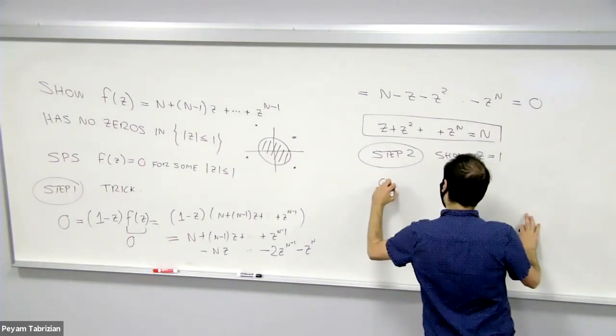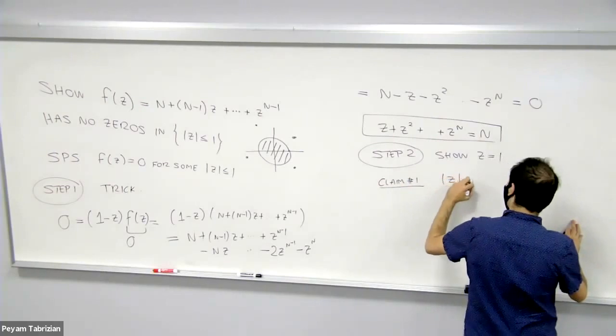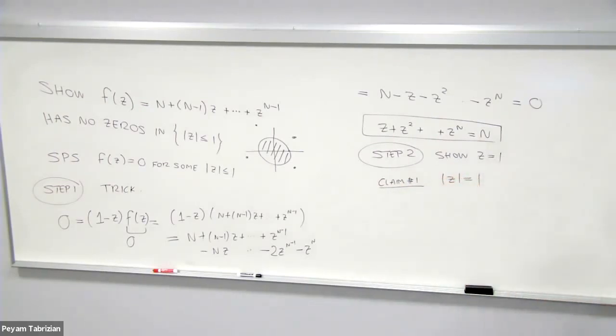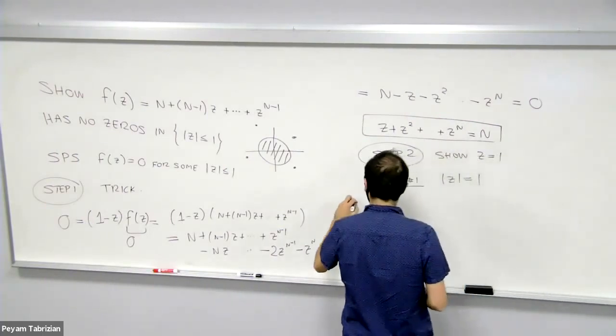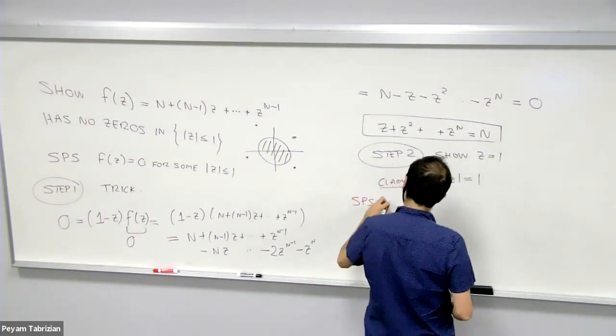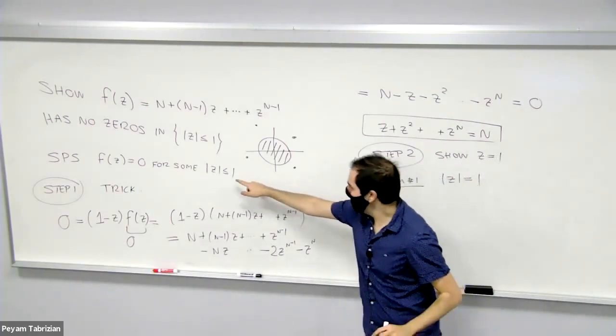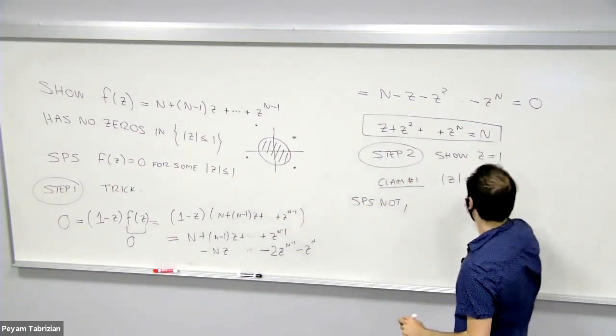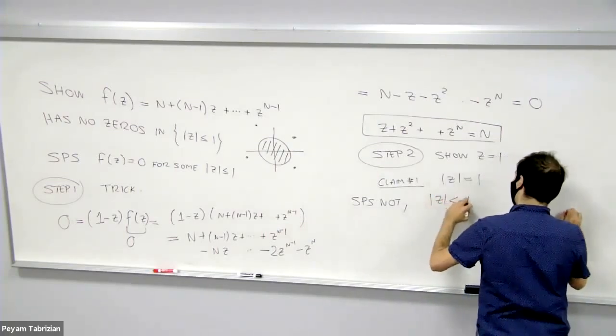And we'll do this in two steps. First of all, claim one will show that z, at least in absolute value, must equal one. And this will do by contradiction. So again, suppose not. Then what does that mean? It means that |z| is less than or equal to one but not equal one. That means |z| is strictly less than one.